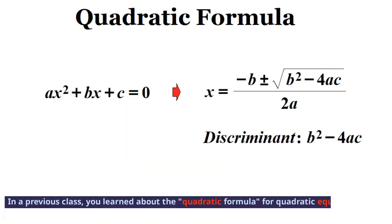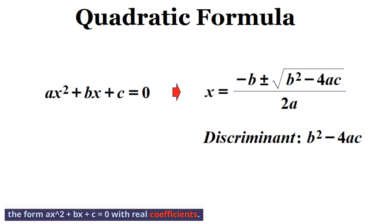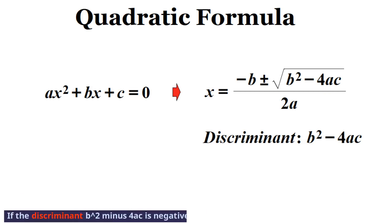In a previous class, you learned about the quadratic formula for quadratic equations of the form x squared plus bx plus c equals zero with real coefficients. If the discriminant b squared minus 4ac is negative, you have complex solutions.